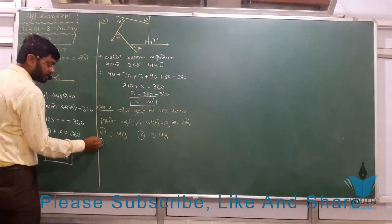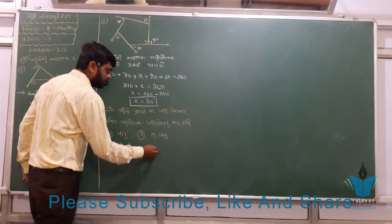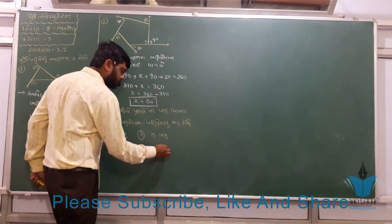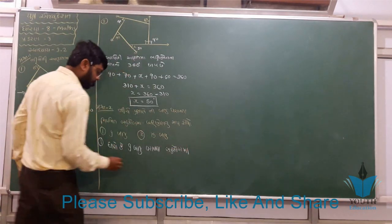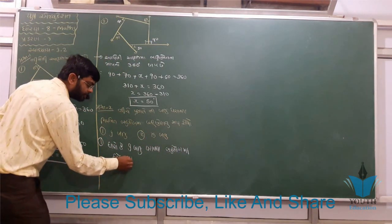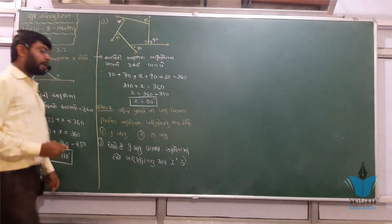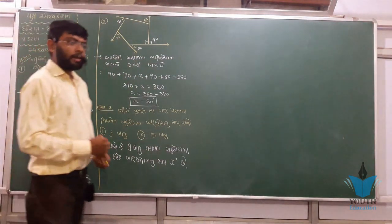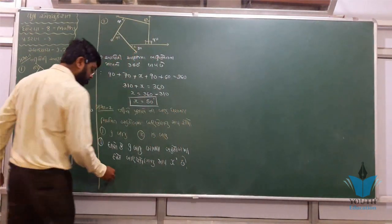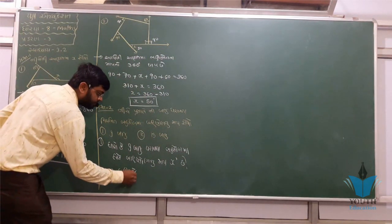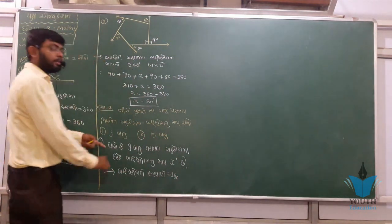દરેક તારો કે પહેલો — બાજુ ધરાવતા બહુ-કોણ માં, દરેક બહિષ્કોણ નો માપ — x પ્રત્યેક બહિષ્કોણ કેટલો છે? આપડે જાણ્યે છે કે બહિષ્કોણોનો સરવાળો 360° થાય.